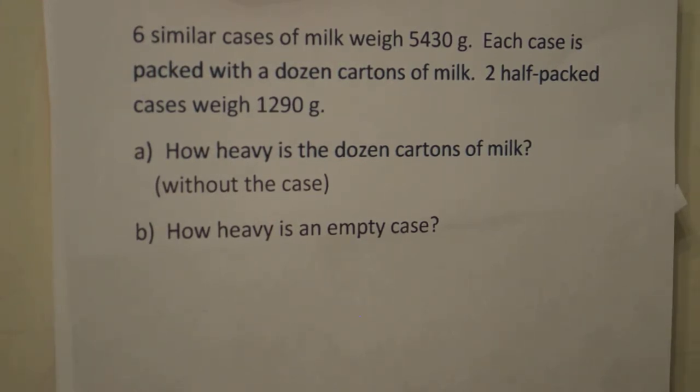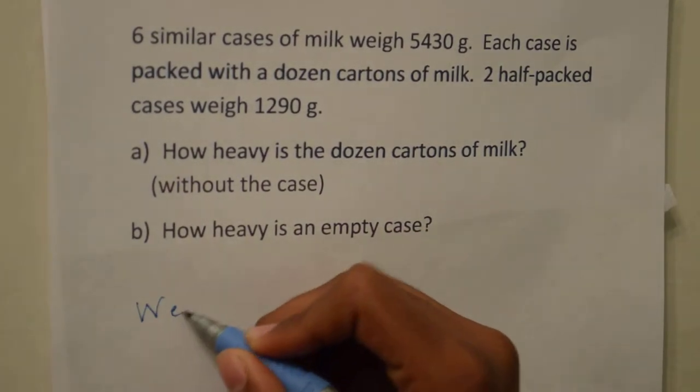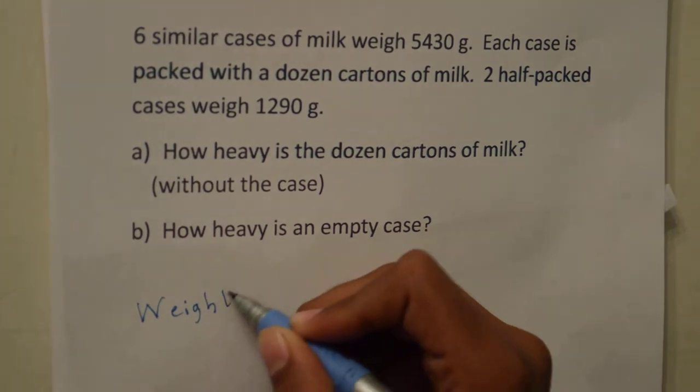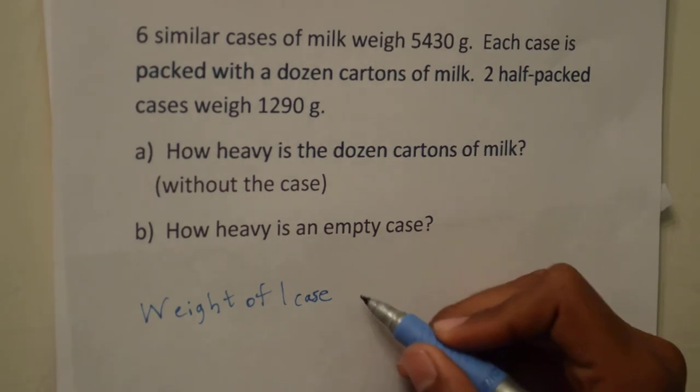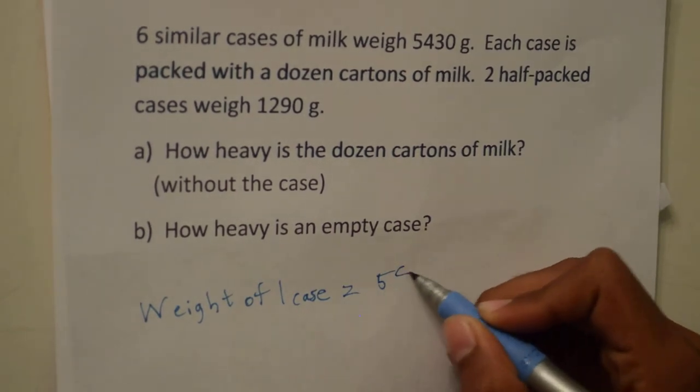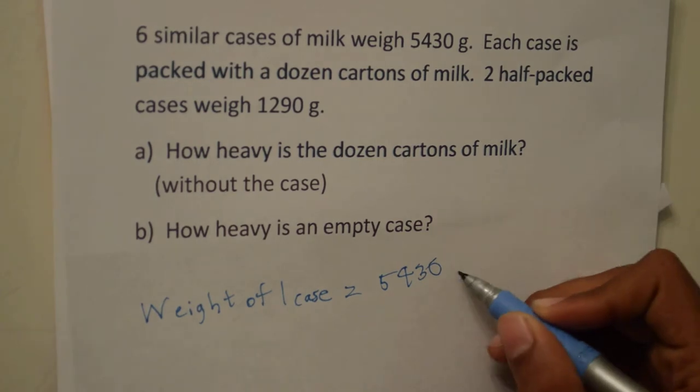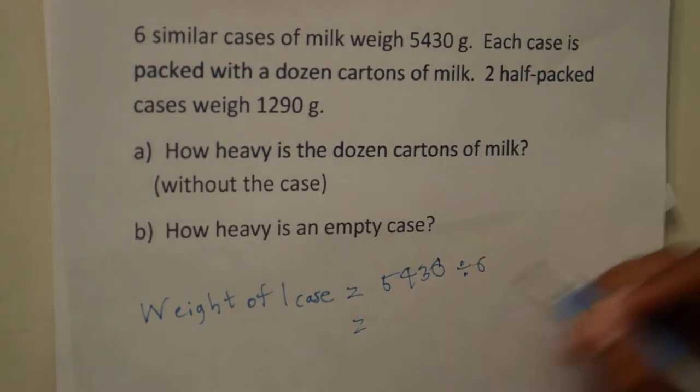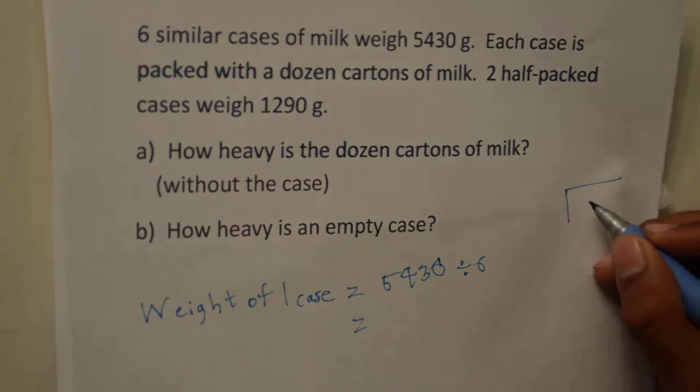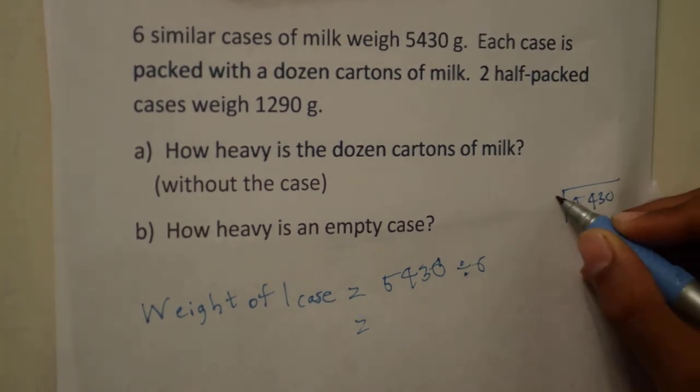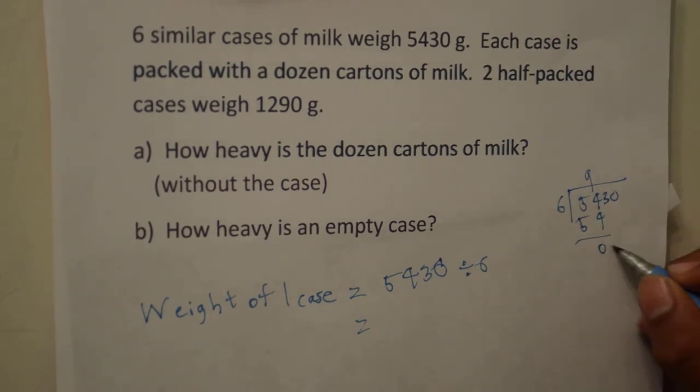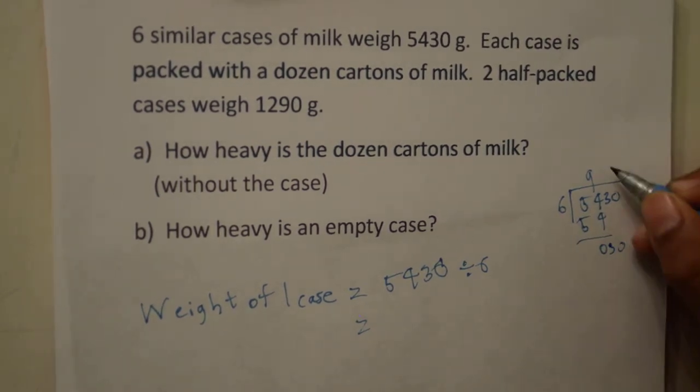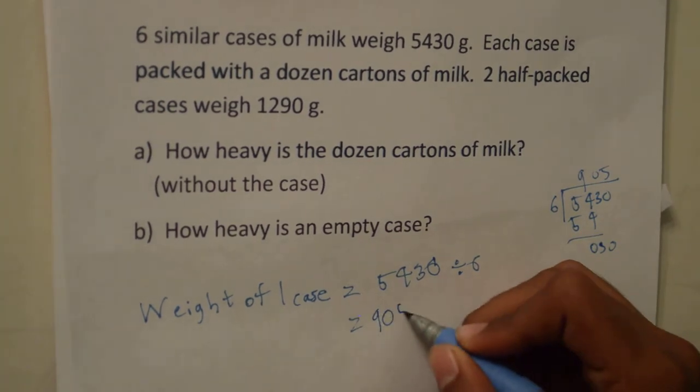Okay, so first let's find the weight of one case with a dozen cartons of milk. And that's just equal to 5,430 divided by 6, and that is equal to 905 grams.